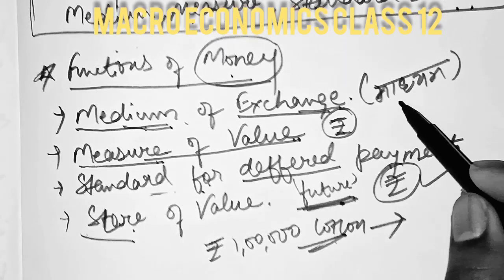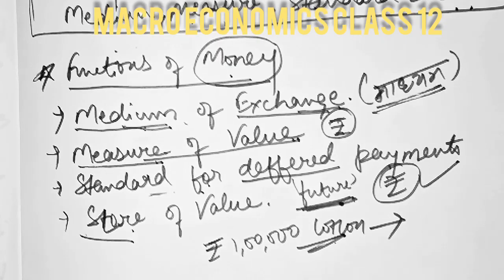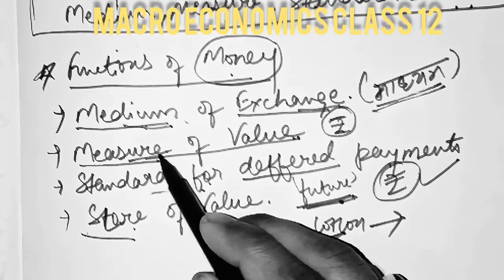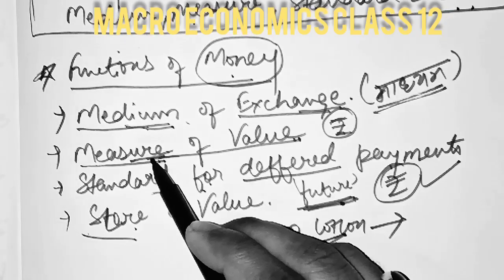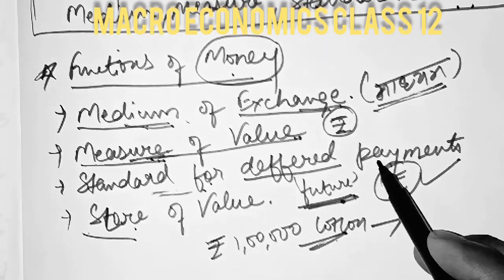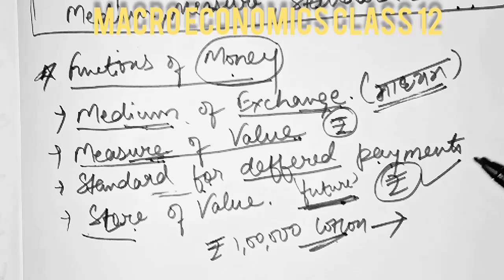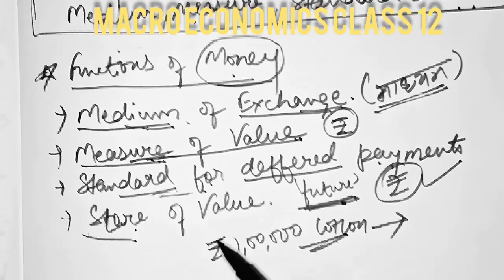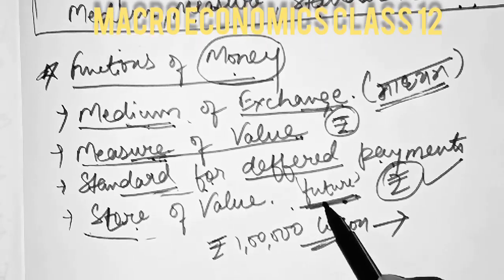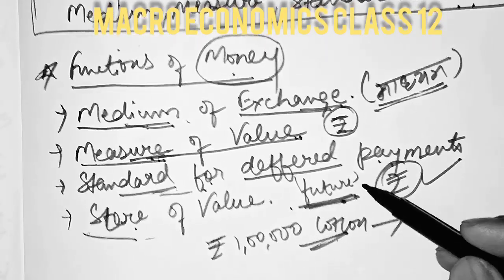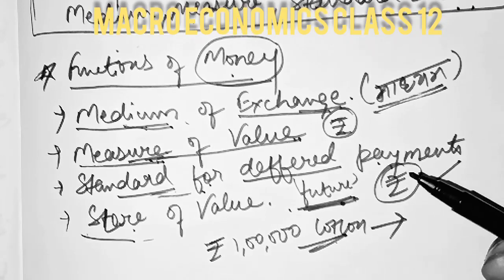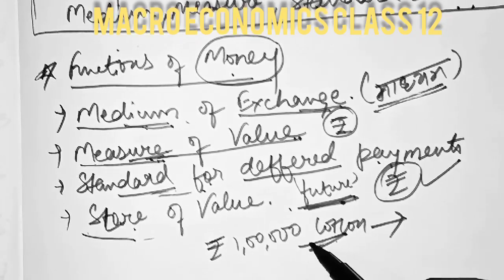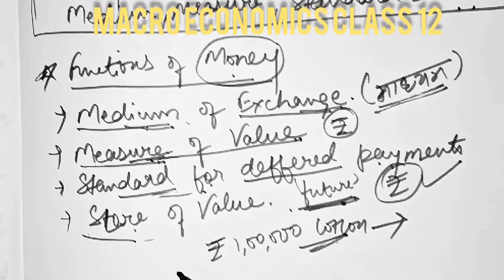So the four functions are: medium of exchange, measure of value, standard for deferred payments — meaning for future payments we need to use money in a better way — and store of value, which means we need to store money efficiently. That is more efficient and more beneficial.